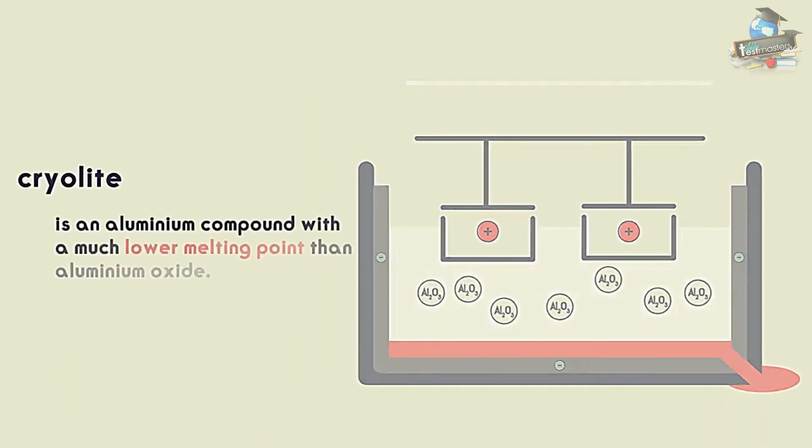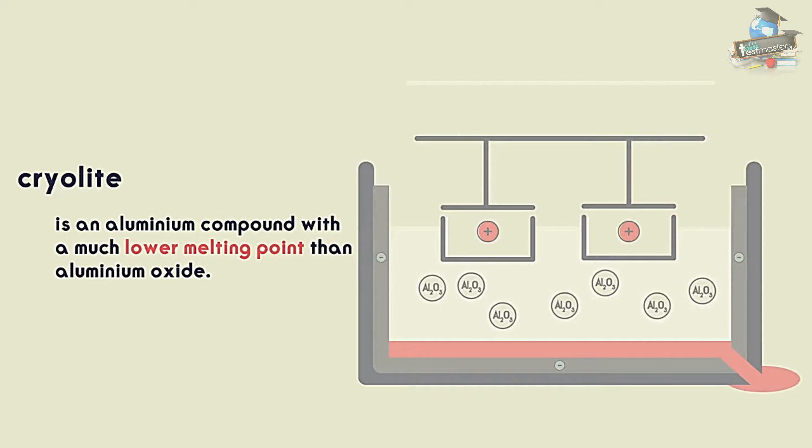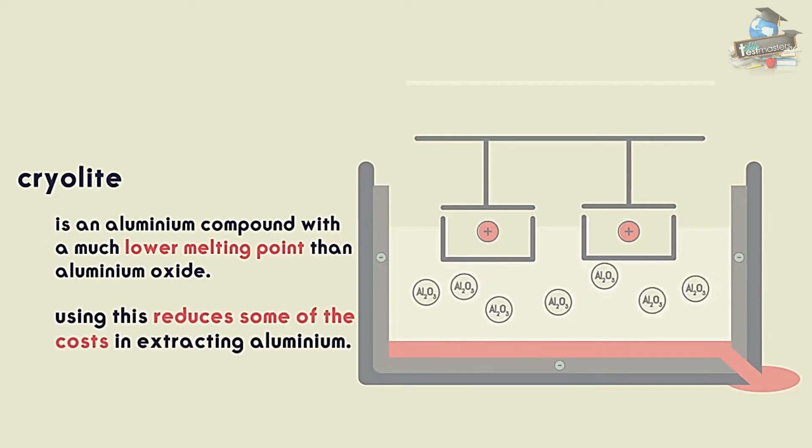Cryolite is an aluminium compound with a much lower melting point than aluminium oxide and so using this reduces some of the costs in extracting aluminium.